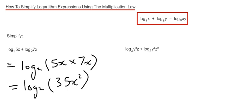Let's do the second one then. This one's a little bit trickier to do. We've got log base 3 y cubed z plus log base 3 y squared z squared. So again we can simplify this by multiplying y cubed z.